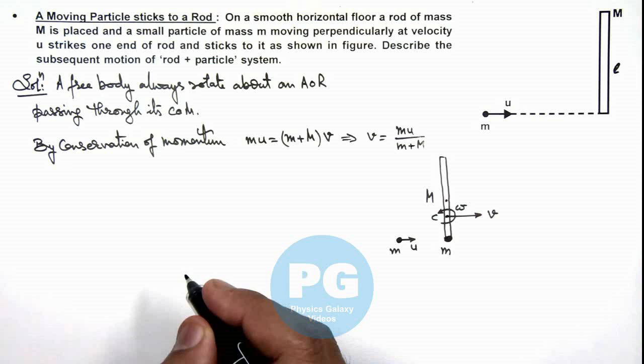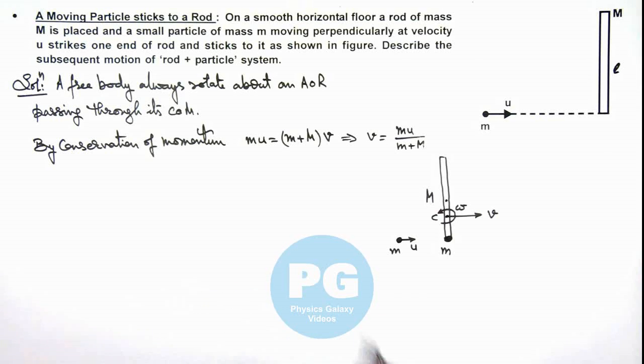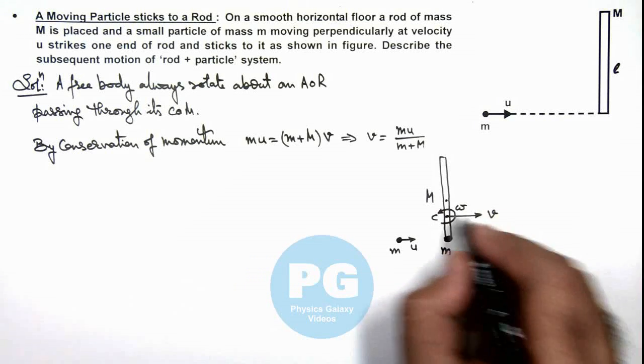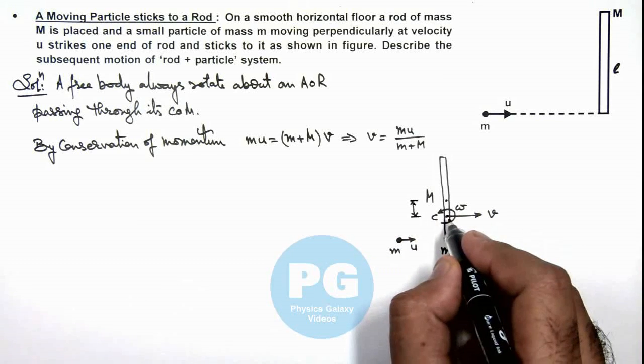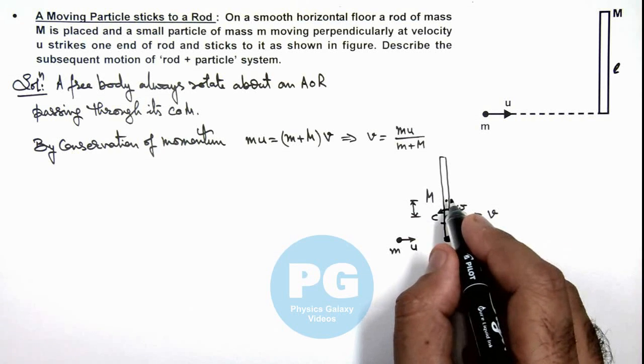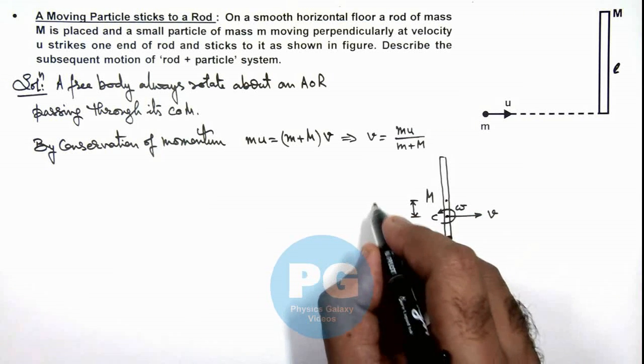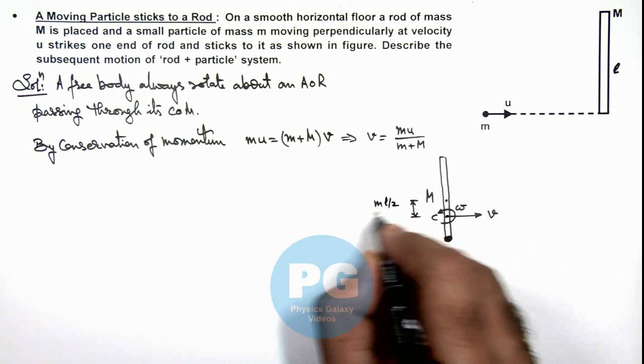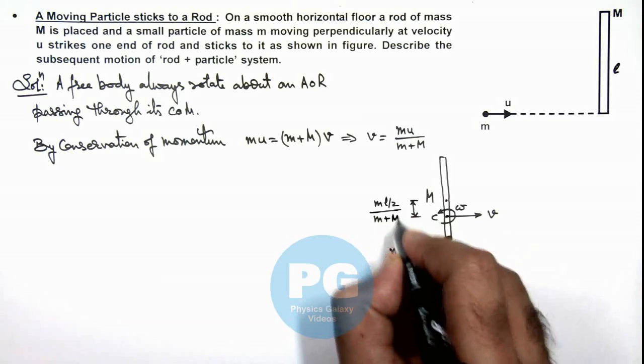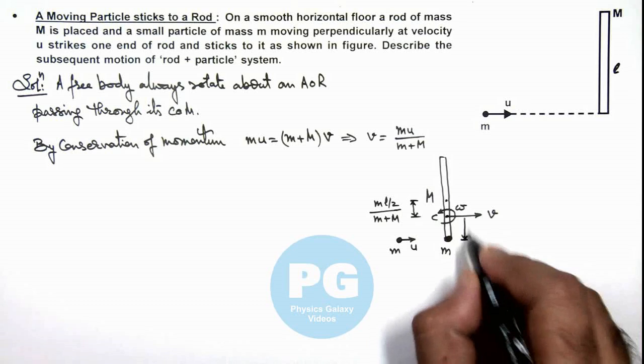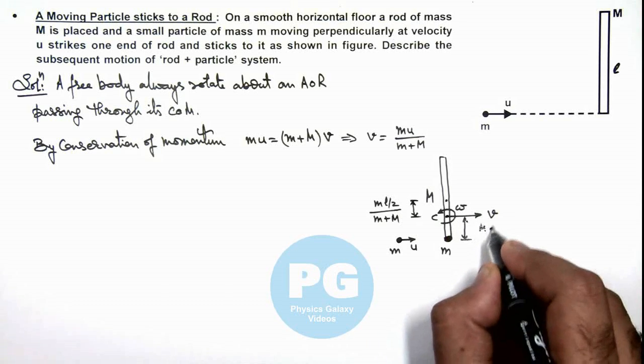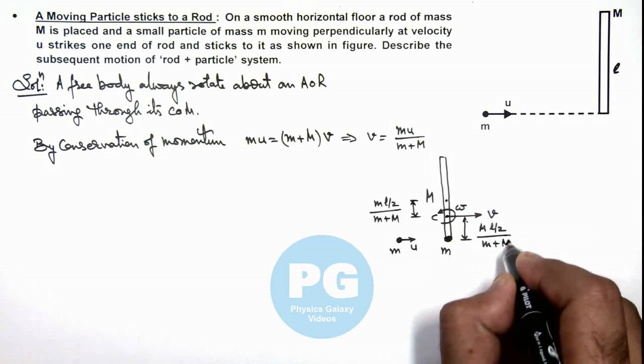And now if we talk about the location of this center of mass, the distances are all available to us. The distance of center of mass from M we can write as (ml/2)/(m+M), and the remaining distance from this small m will be (Ml/2)/(m+M).